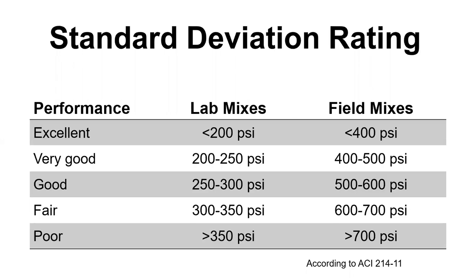For compressive strength cylinders, ACI 214 talks about analyzing and estimating compressive strength results with a standard deviation rating table, showing performance criteria versus lab mixes and field mixes. A field mix should have roughly twice the standard deviation of a lab mix — so be aware that field concrete is inherently more variable than lab-produced concrete.